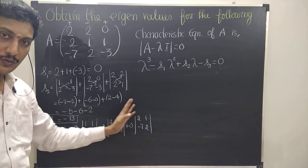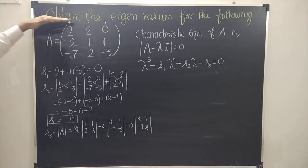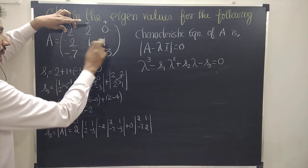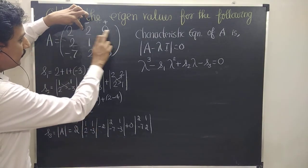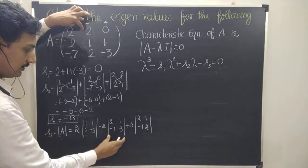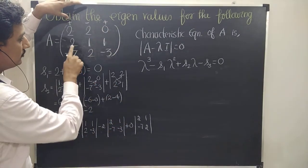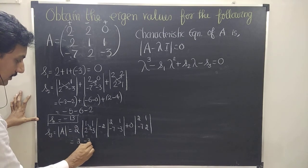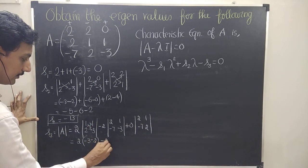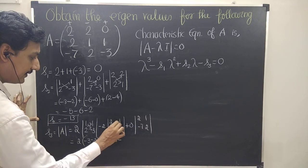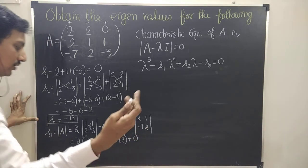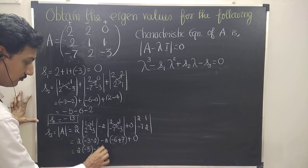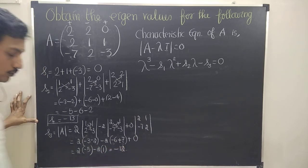Anyhow, the last term is 0, so we don't bother about it. Now: 2 into (1 into minus 3 is minus 3, minus 2 into 1 is minus 2) gives 2 into minus 5. Minus 2 into (2 into minus 3 is minus 6, minus minus 7 into 1 is plus 7) gives minus 2 into 1. So: minus 10 minus 2, which is minus 12. So S3 is minus 12.